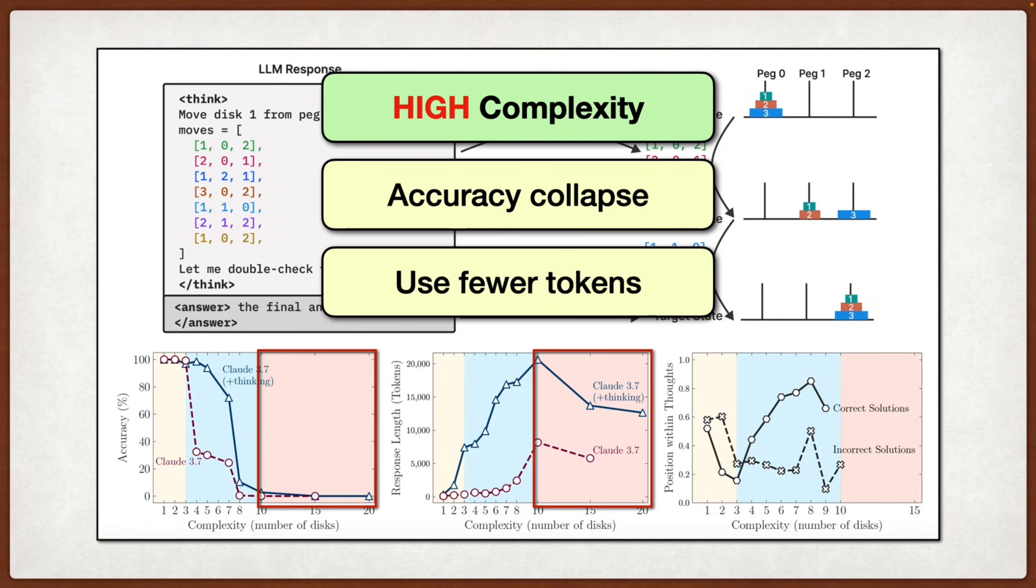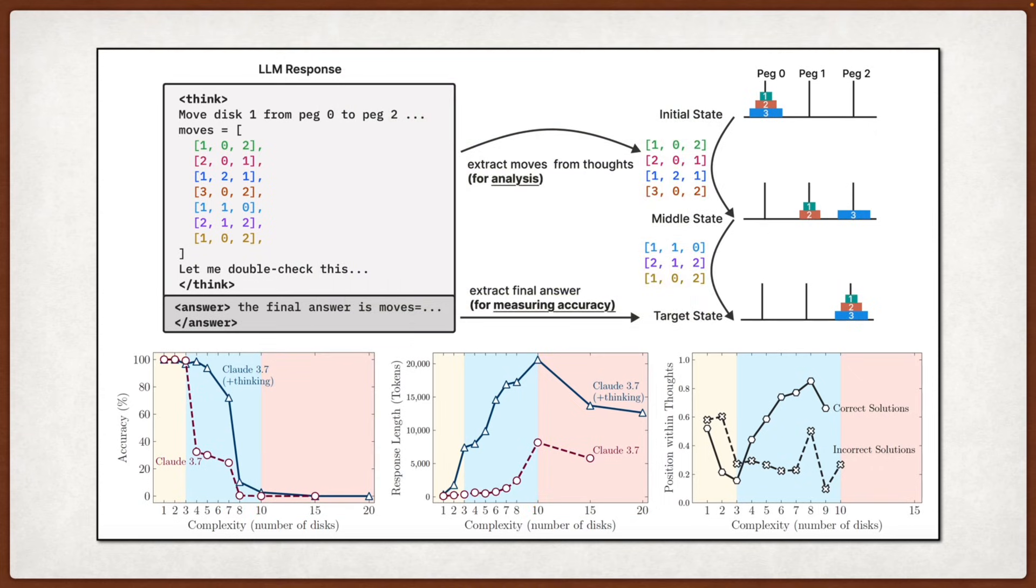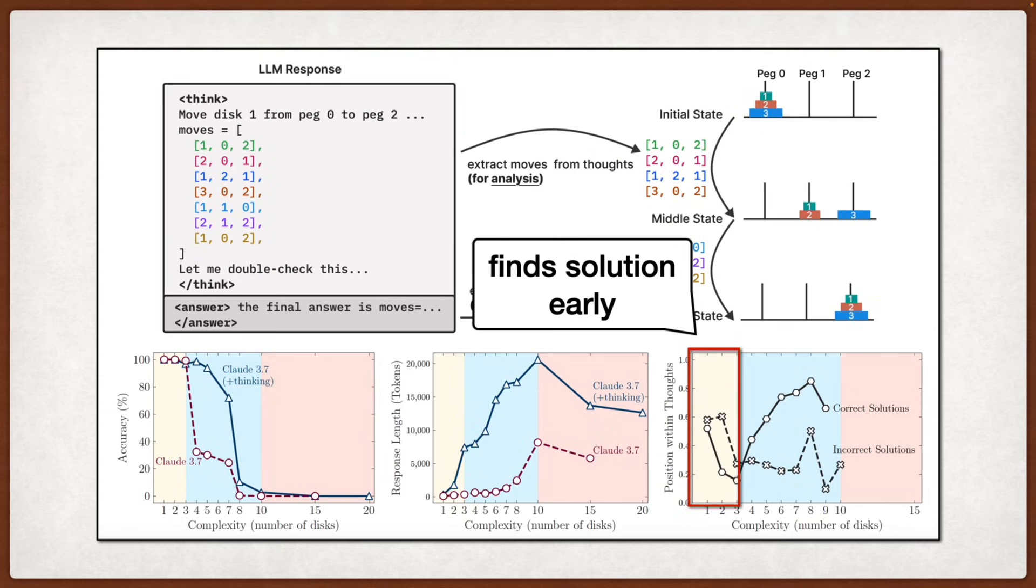Also, when they analyze the actual reasoning traces, they find some really revealing patterns. For simple problems, the models often find the correct solution early but then continue exploring incorrect alternatives. This overthinking phenomenon wastes compute and sometimes leads them to second-guess correct answers.